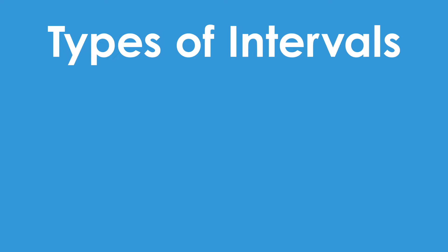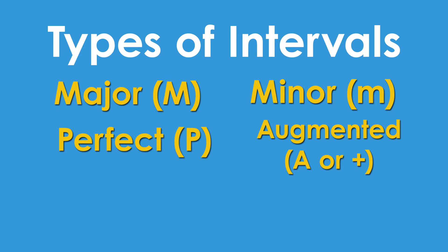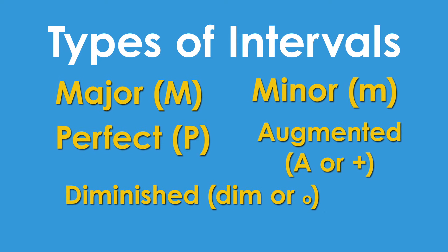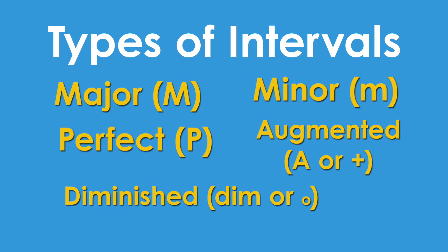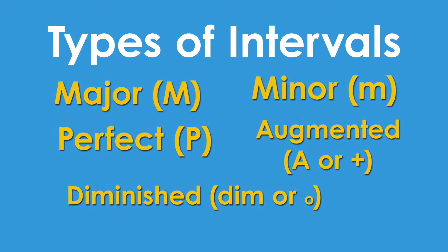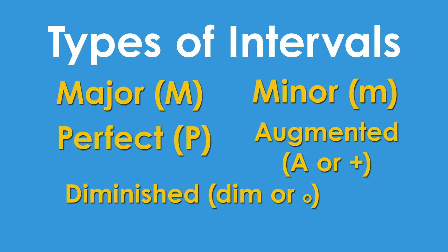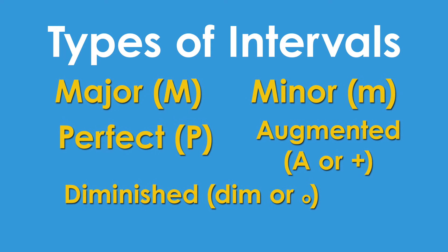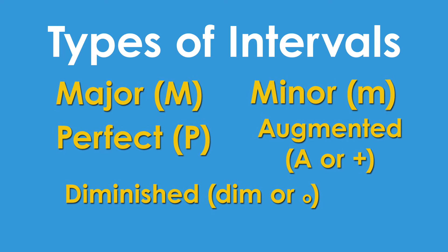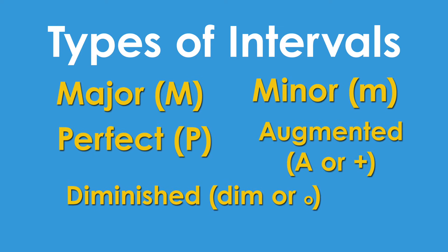Now, for the second part of any interval name, the type. The type of an interval can be described with a number of different names, including major, minor, perfect, augmented, and diminished. Notice that all of these names also have a shorthand. Major is a capital M, minor is a lowercase m, perfect is a capital P, augmented is a capital A or a plus sign, and diminished is shortened to dim or a small circle.